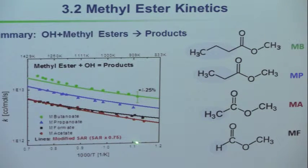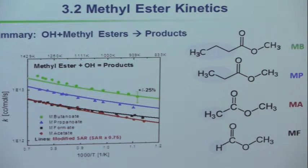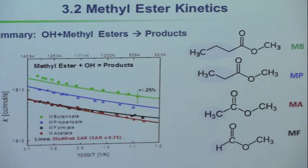Interestingly, there's a simple model by a fellow named Atkinson — the Structural Additivity Reaction Rate Method — which just looks at molecular structure and tries to predict rate coefficients. If we take that simple model, which has probably been out for 10-20 years, and multiply his numbers by 0.75, it's amazingly consistent with our experiments. That's the simplest level of theory that explains the change in rate coefficient with structure. You really need good experiments to resolve these differences in theory.